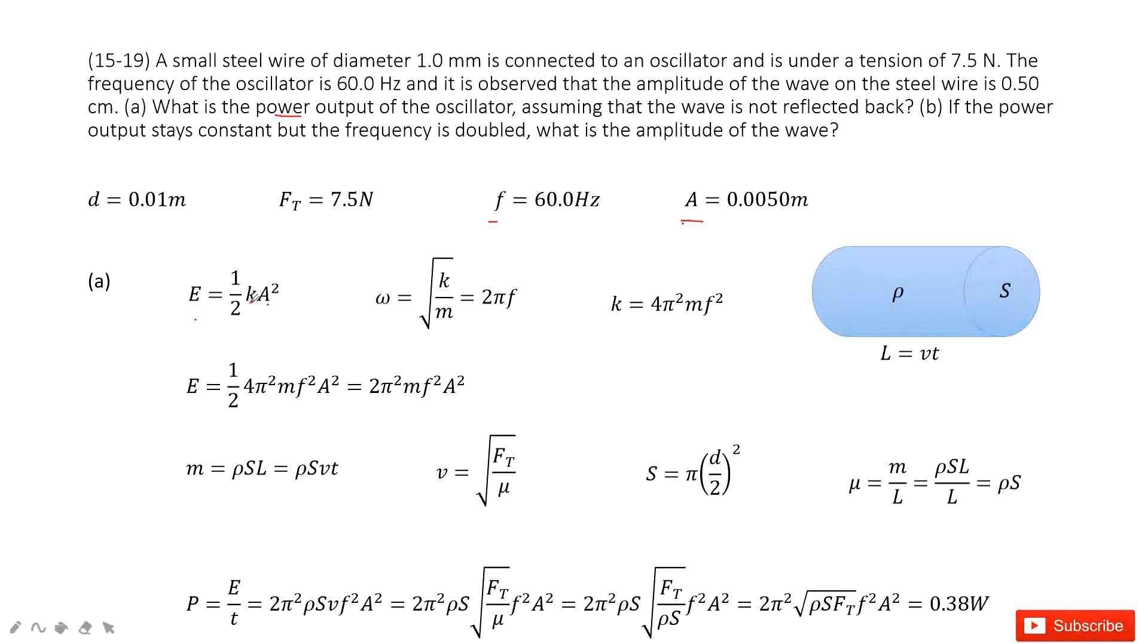And luckily this is a simple harmonic oscillator. So the angular velocity ω squared equals k over m. Equal to 2πf.